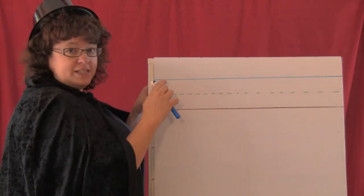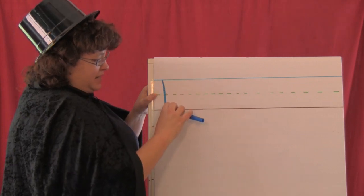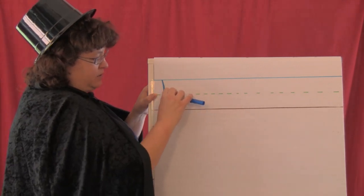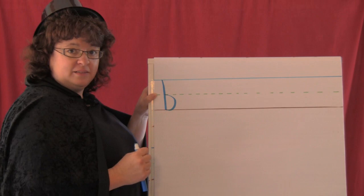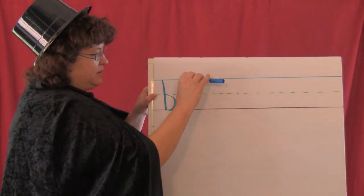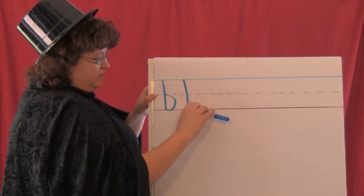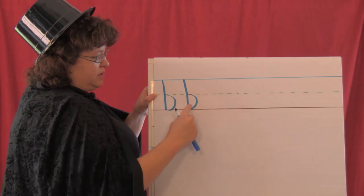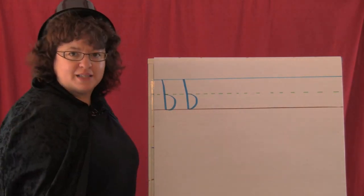We're going to start at the top line. Big line down, little around, b. Let's do it again. Big line down, little around, b. Now I want you to practice.